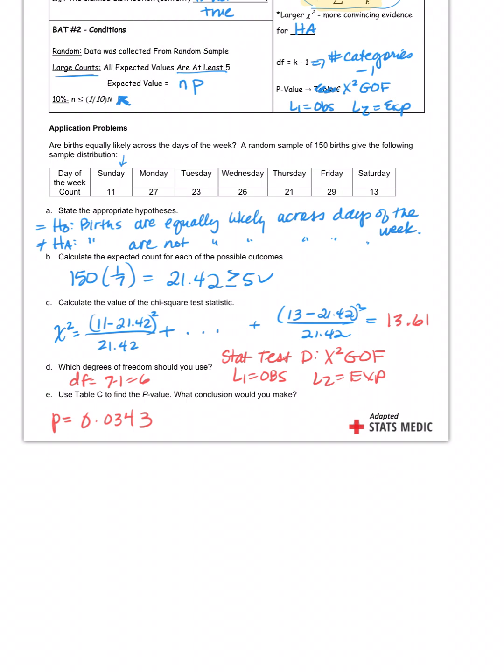Now, if you're looking at your calculator, it also gives you this line that says contributions. What the heck does that mean? Well, contributions has to do with which day of the week, when we subtracted observed and expected, had the biggest difference. Because ultimately, each day of the week is contributing something to the overall sum, isn't it? And that contribution is determined by the difference. Sunday was 11 minus 21, that was 10. 27 minus 21 is only a difference of 6. This is a difference of 2. This is a difference of 4. Almost no difference here. Difference of 8. This one had a big difference, didn't it? Sunday was the biggest contributor, though, because it's almost 10.